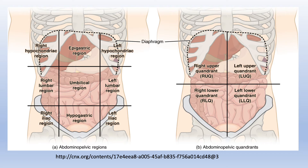In the right upper quadrant: the right portion of the liver, gallbladder, right kidney, a small portion of the stomach, portions of the ascending and transverse colon, and parts of the small intestine.